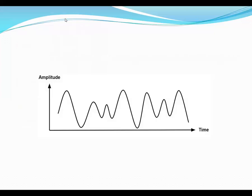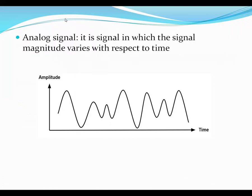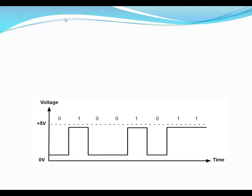So first we will discuss what is analog signal. In an analog signal, the signal magnitude varies with respect to time. Here the graph is plotted between amplitude versus time. Since the magnitude of the signal varies with respect to time, this type of signal is called an analog signal.